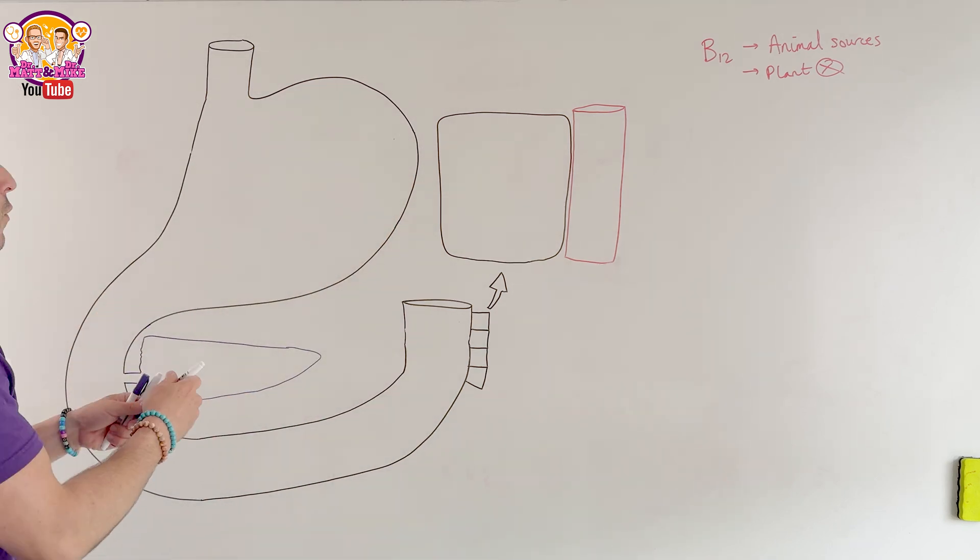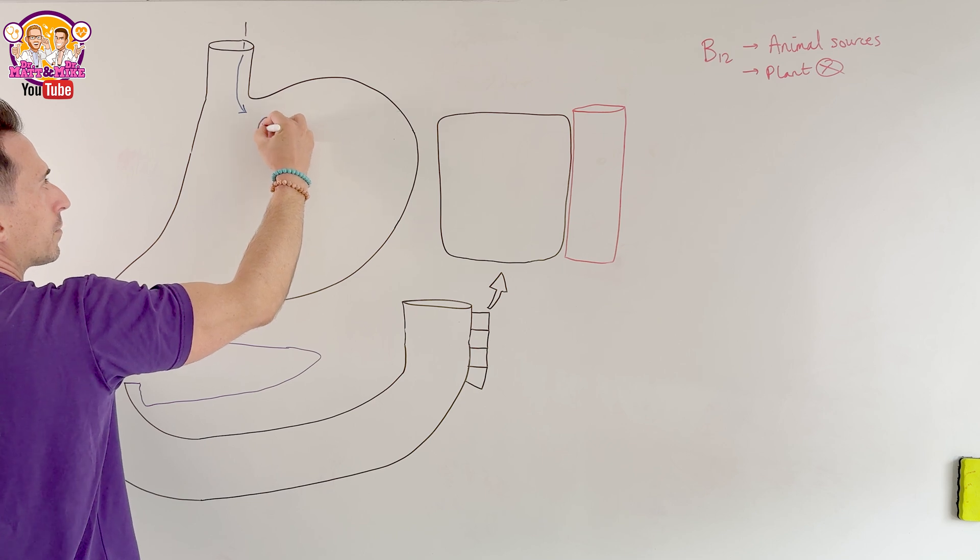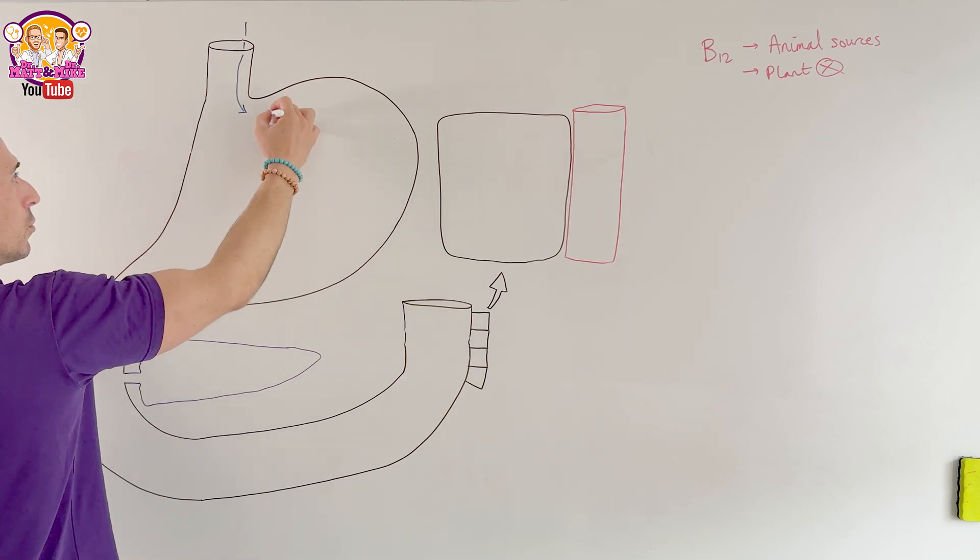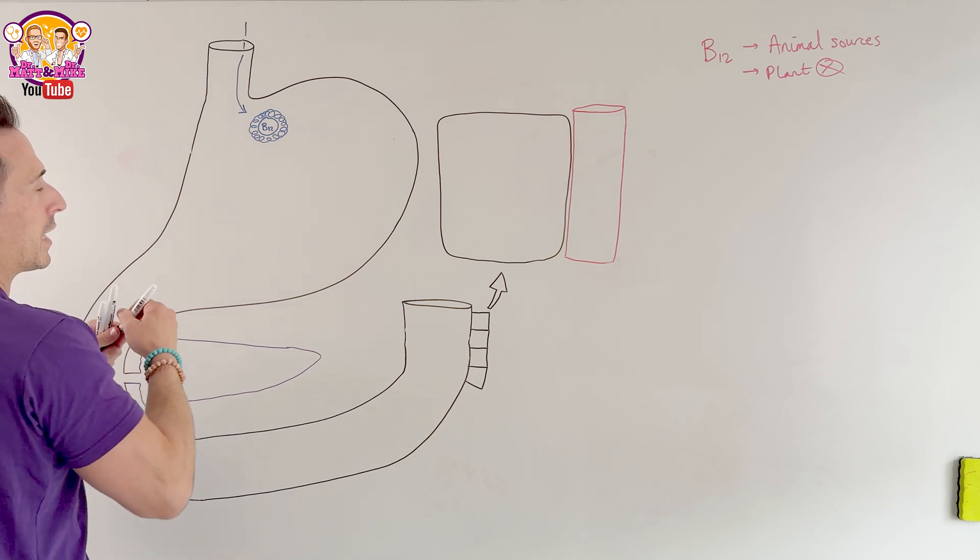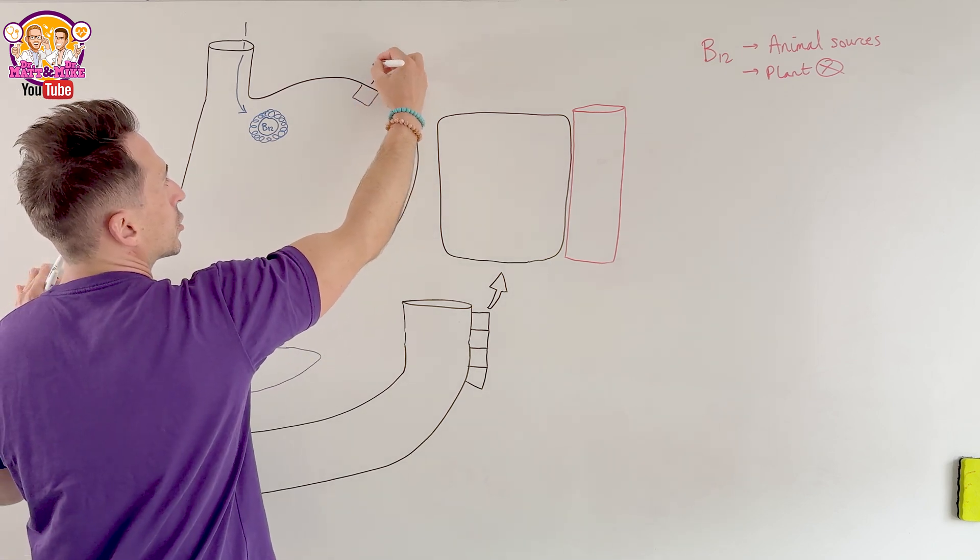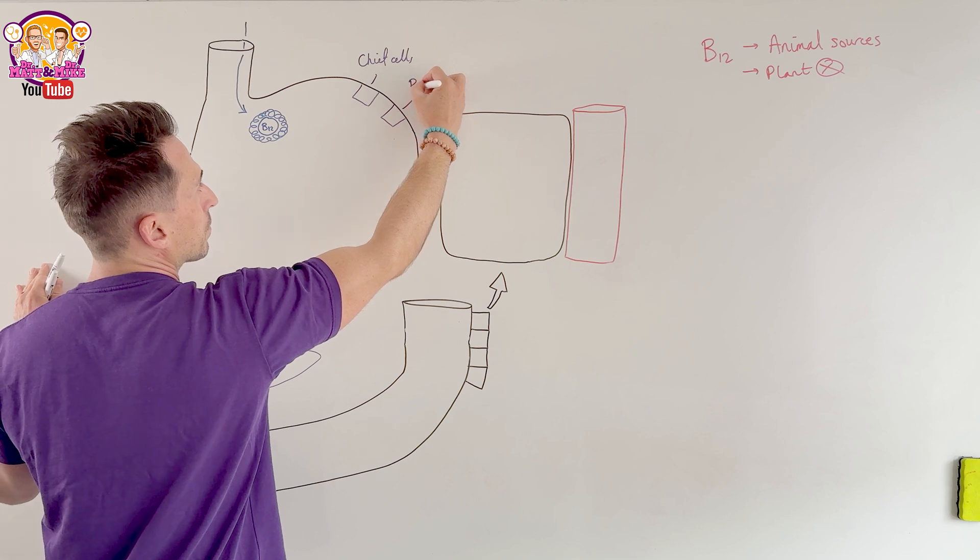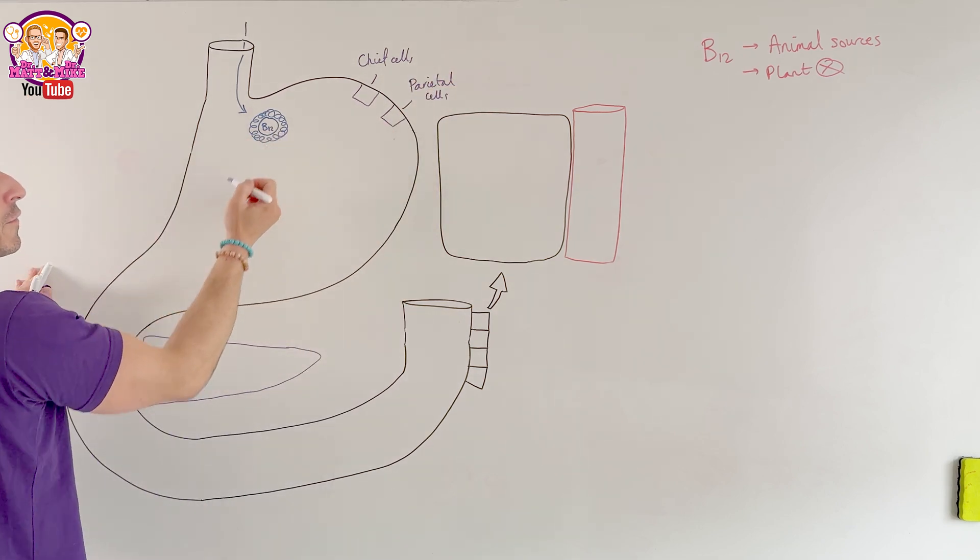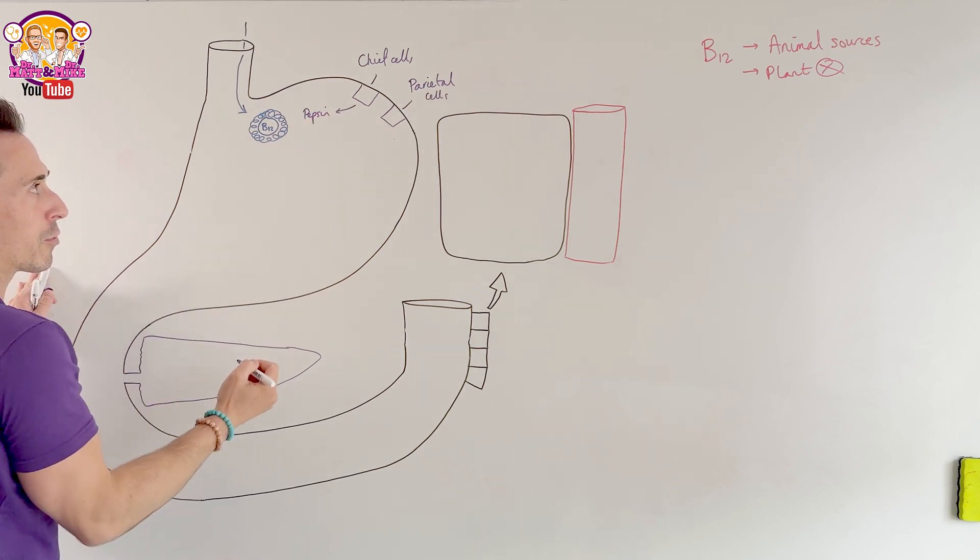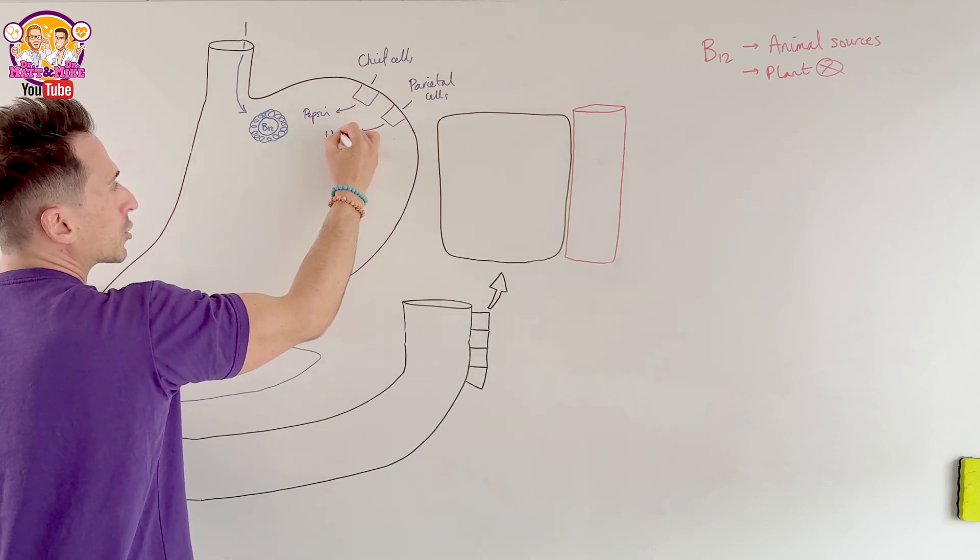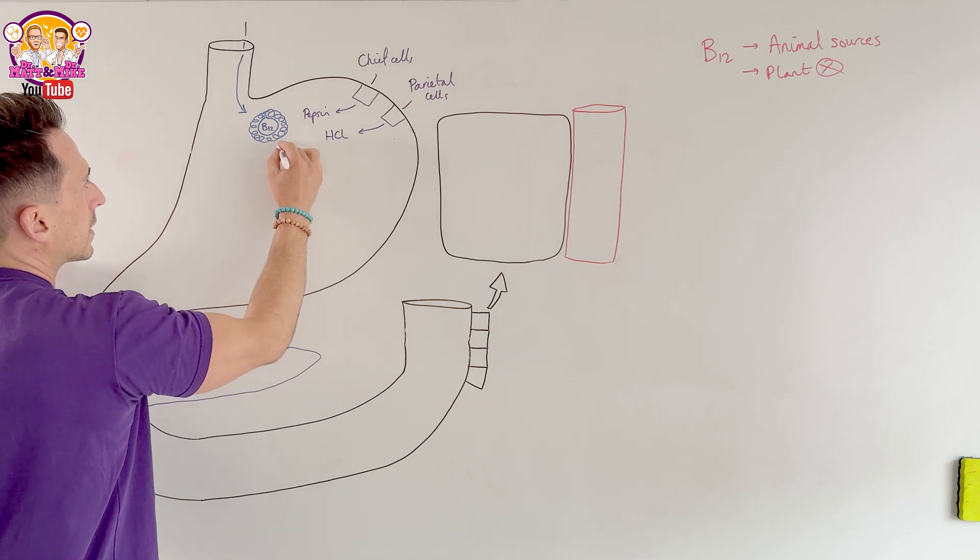So let's first talk about the B12 that we are ingesting in our food. So we bring B12 in from the food that we eat. So here's B12. And the B12 is going to be, like I said, in the food. So it's just going to be surrounded by all this foodstuffs. Now, thankfully, we have a number of cells in our stomach. We have what's called chief cells.